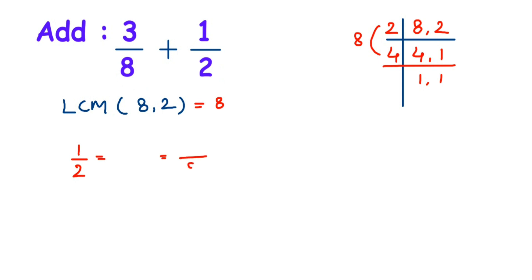Let's do it for 1 by 2. Now this 2, I have to change it to 8. So I have to find out the equivalent fraction of 1 by 2 where the denominator is 8. We have to multiply here because we should get 8. So what number is going to give us 8 here? 4.